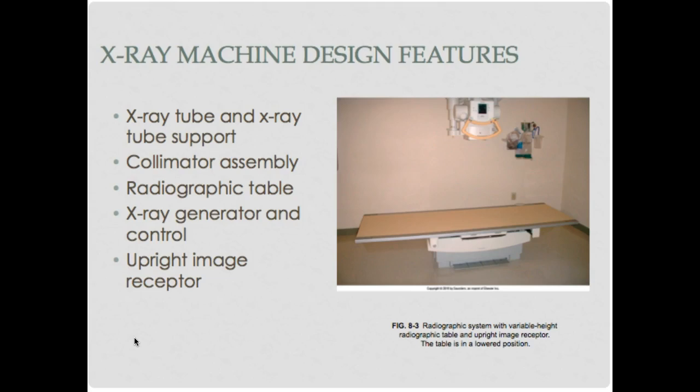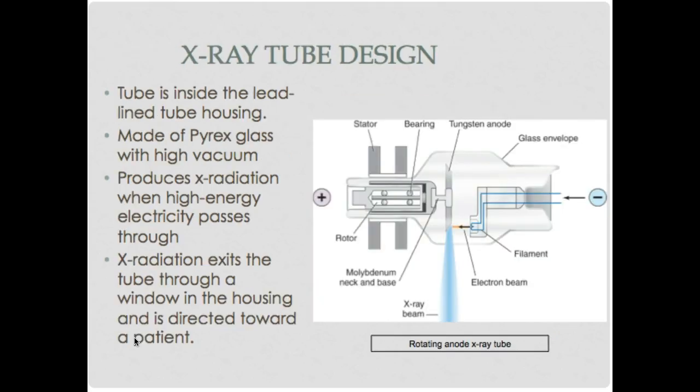Within an x-ray room we have the x-ray tube and support systems, collimator assemblies, radiographic table, x-ray generators and controls, and upright image receptors. The tube is a plexiglass vacuum, and within it we have the cathode assembly (negative side) and the anode assembly (positive side). On the cathode side we have the small and large filament, which boils off electrons and shoots them across to the anode when electricity is applied.